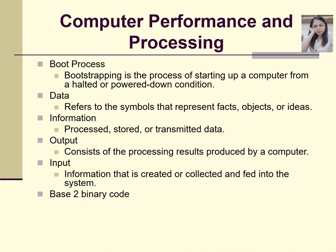Data are the words that you type inside your computer or the things that you install. Information is processed, stored, or transmitted data once you have already typed. For example, the commands you use in Excel, Word, or PowerPoint. The output will be the result — for example, when you print a document, that is called the output.